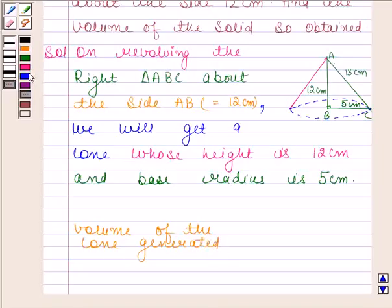Now here height, that is h, is equal to 12 cm and base radius, that is r, is equal to 5 cm. You know that volume of the cone generated is equal to 1/3 π r² h. By substituting the values of r and h,